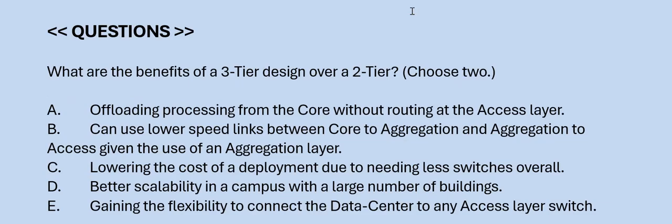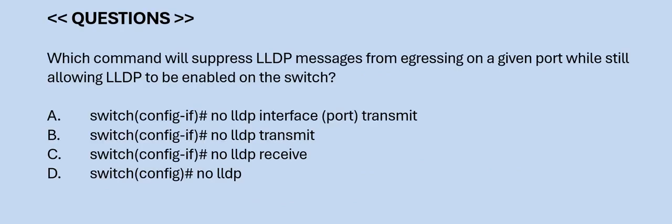Next question: What are the benefits of a 3-tier design over a 2-tier? Choose two. Option A: offloading processing from the core without routing at the access layer. Option B: can use lower speed links between core to aggregation and aggregation to access given the use of an aggregation layer. Option C: lowering the cost of a deployment due to needing less switches. Option D: better scalability in a campus with a large number of buildings. Option E: gaining the flexibility to connect the data center to any access layer switch. The correct answers are Option A and D.